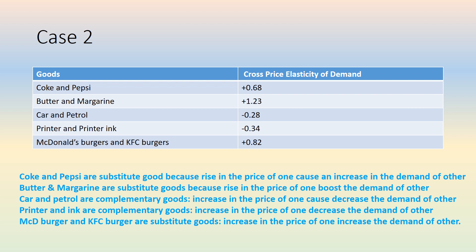Complementary goods: if the price of the first commodity goes up and demand for the second commodity comes down, they are called complementary goods. Same as the example of printer and ink, and similarly McDonald's burgers and KFC burgers. This example is exactly a replica of Coke and Pepsi, and butter and margarine.